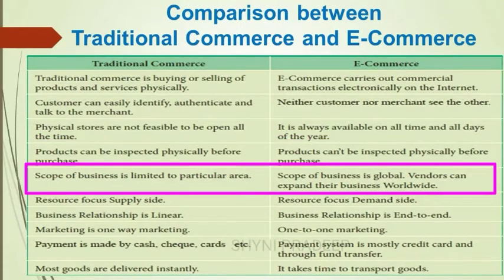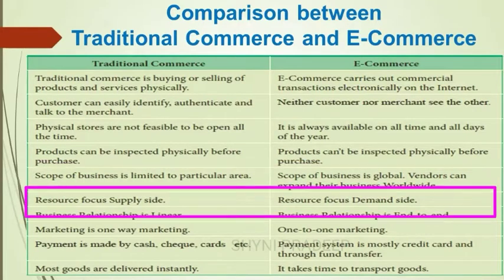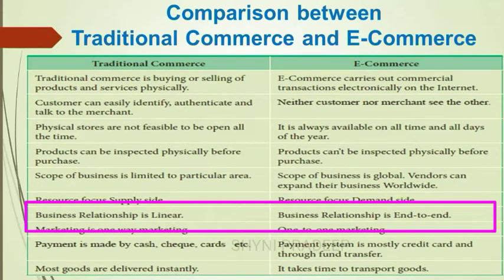In traditional commerce, the scope of business is limited to a particular area. Whereas in e-commerce, the scope of business is global — businesses can expand worldwide. In traditional commerce, resources focus on the supply side, whereas in e-commerce, resources focus on the demand side. In traditional commerce, business relationship is linear, but in e-commerce, business relationship is end to end.